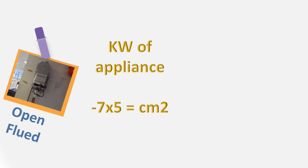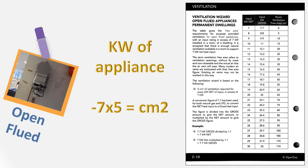However, every gas book will have a ready reckoner or a chart that will explain it all for you, and you can quickly work out the ventilation requirements. For example, here we've got a 14 kilowatt net appliance and you can see that it requires 35 centimeters squared of ventilation. Don't forget when you're working out your ventilation requirements that you must know whether it's gross or net.